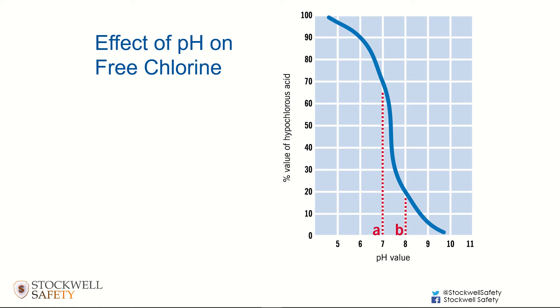Another way of looking at this is to consider this line chart. What we've got is pH values going across the horizontal axis and the percentage value of hypochlorous acid on the vertical axis.